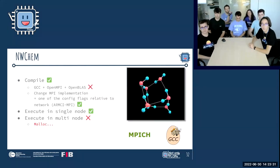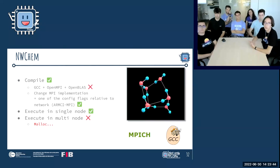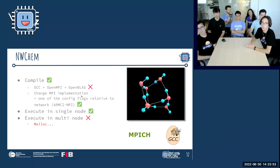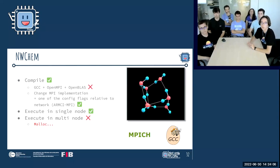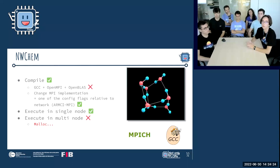For NWChem, we could compile it, but not on the first try. We initially used GCC, OpenMPI, and OpenBLAS but couldn't get the application to run. Fortunately, the main developer Jeff Hammond was present at the competition. He told us to change some flags and switch from OpenMPI to MPICH. Once we made those changes, the application compiled and ran on one node, but crashed on multi-node execution due to an issue with ARMCI. Jeff suggested the issue may not be related to our configuration — since NWChem had never been run on a RISC-V cluster before, it may run smoothly in future.